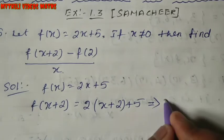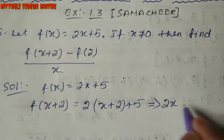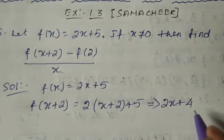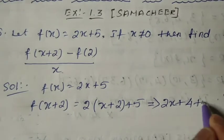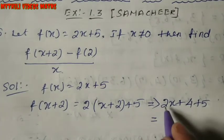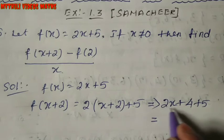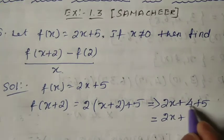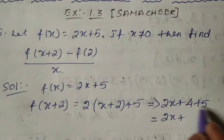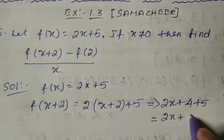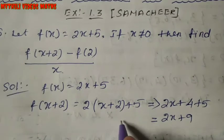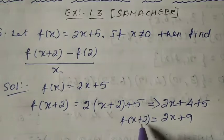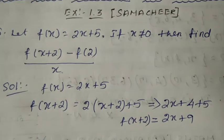So 2 into x is 2x, and 2 times 2 is 4, and then plus 5. We keep the x term as 2x and then add the constant terms: 5 plus 4 is 9. So f(x+2) = 2x + 9. This is the value for f(x+2).